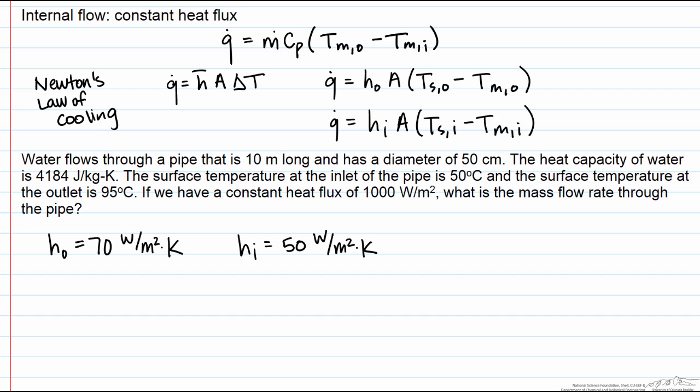The surface temperature at the inlet is 50 degrees C, and that at the outlet is 95 degrees C. If we have a constant heat flux that's equal to 1000 watts per meter squared, we want to know what the mass flow rate of the water is.